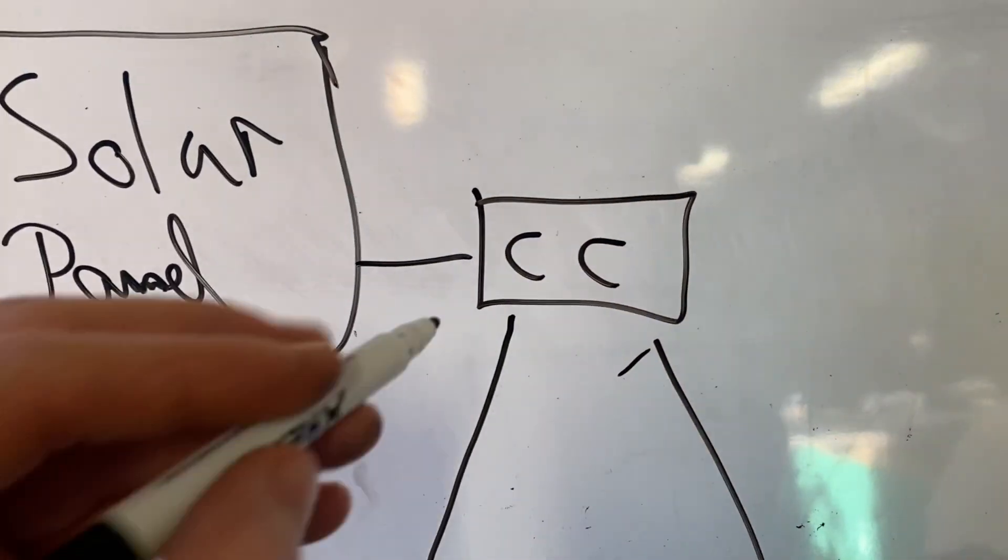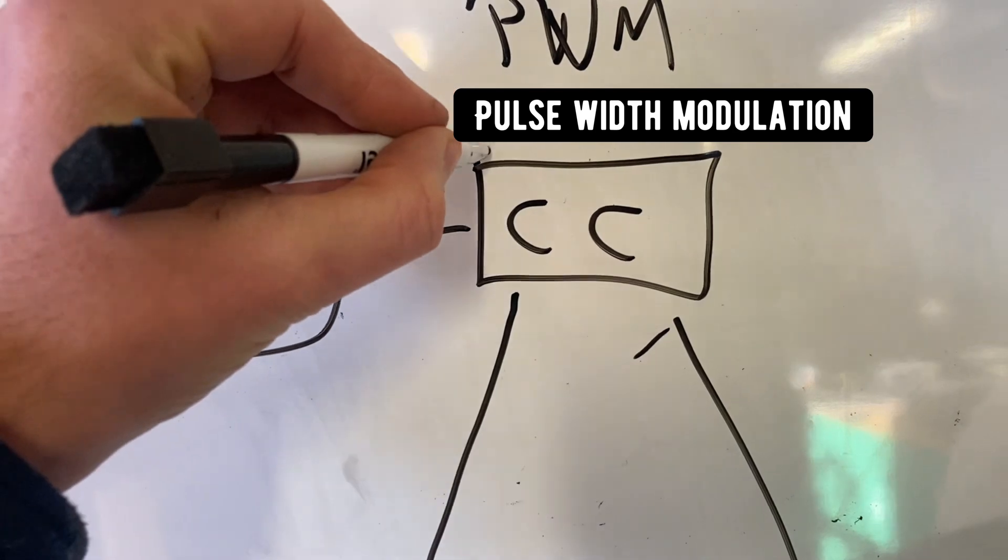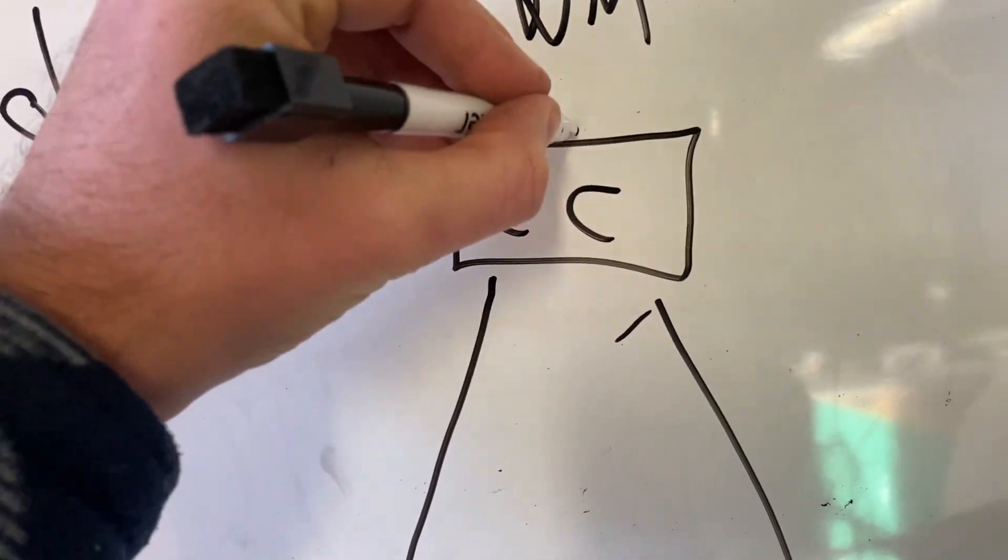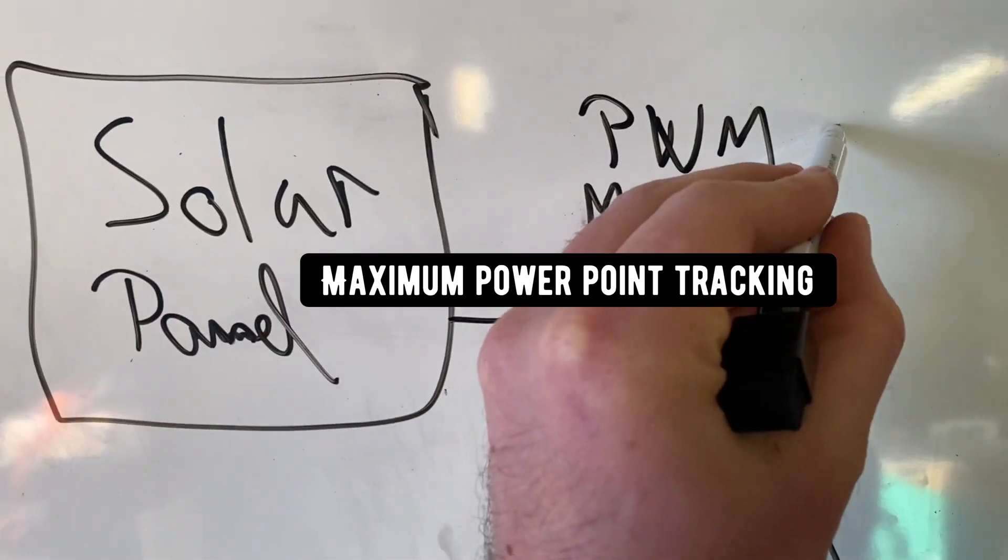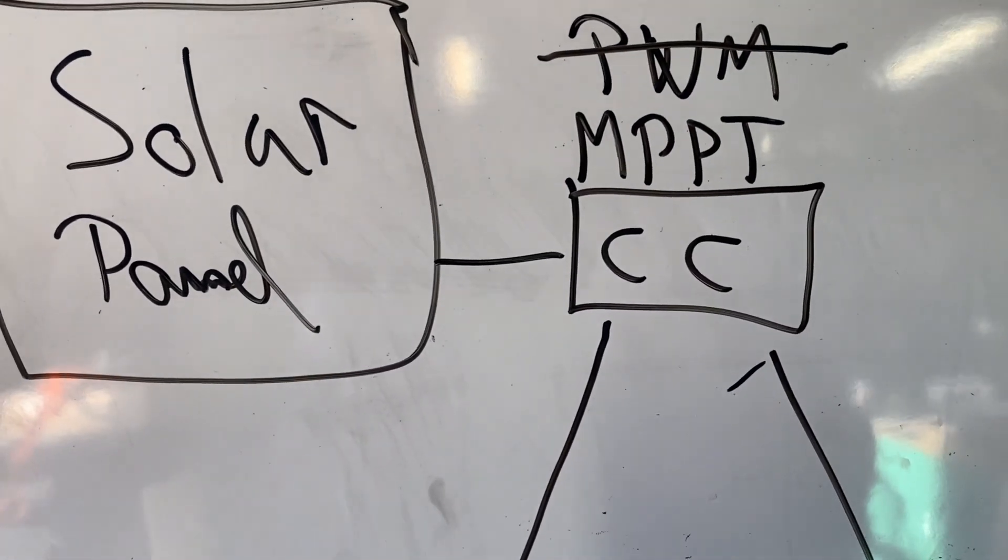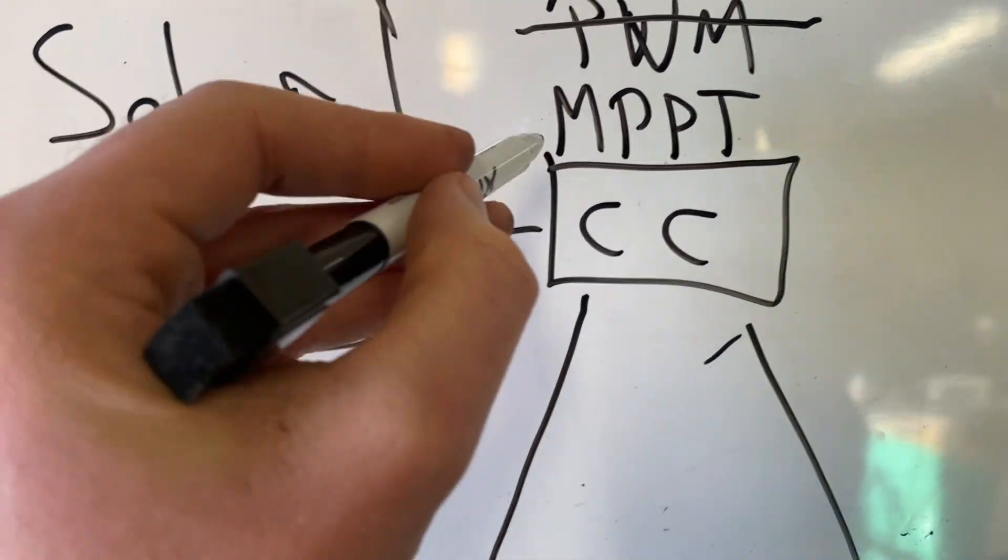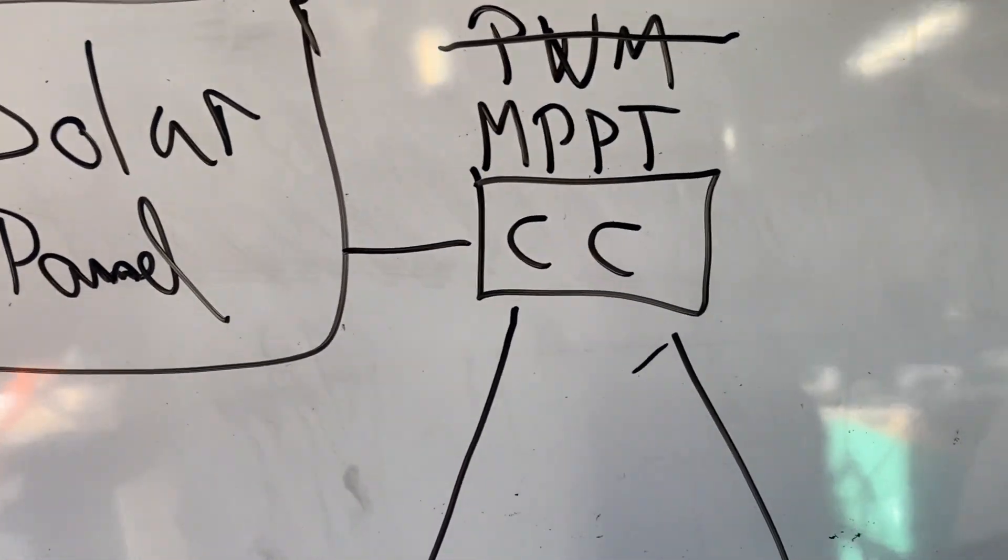Charge controllers—you've got your PWM or MPPT. Scratch the PWM because this is old technology, less efficient. Go for an MPPT solar charge controller.